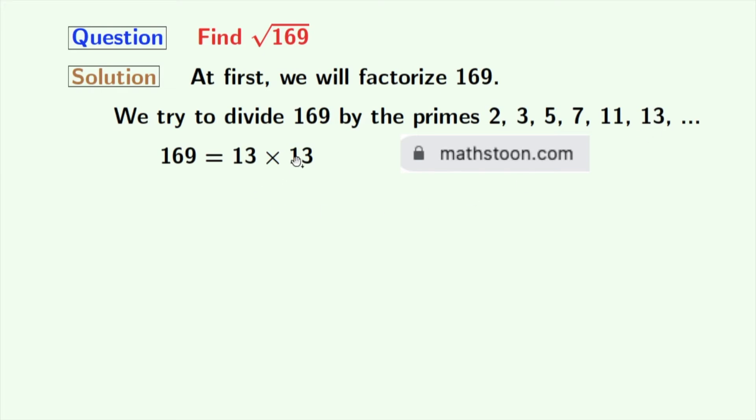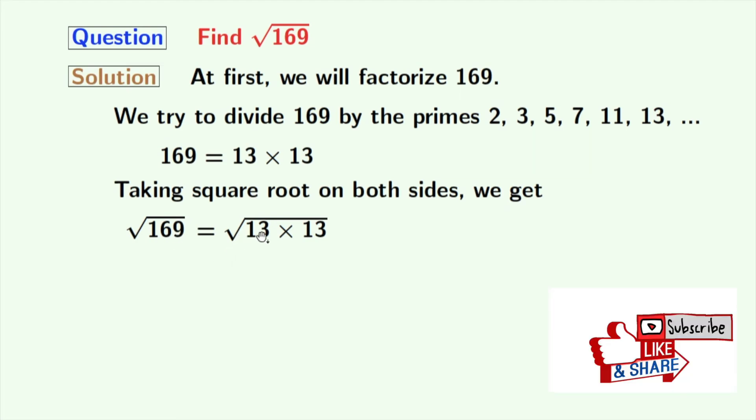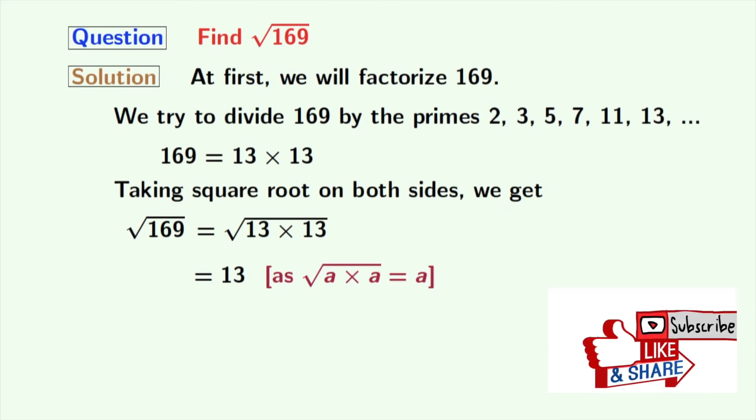Now we will take square root on both sides. So we get square root of 169 is equal to square root of 13 times 13, which is equal to 13.